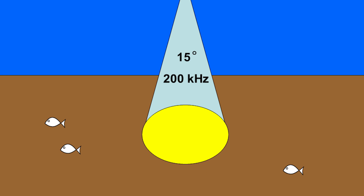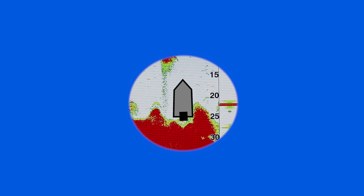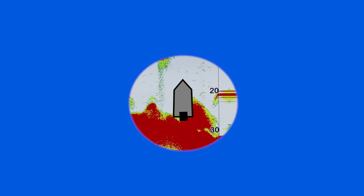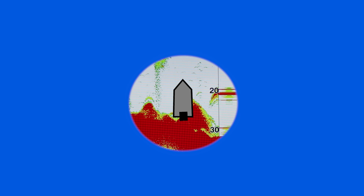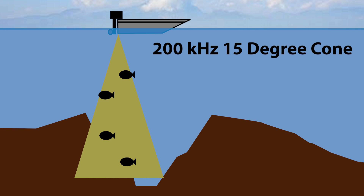The 200k hertz frequency selection uses a 15 degree transducer cone angle, and even though it covers less area it'll give your images greater detail of the bottom terrain. The 200k hertz frequency also allows you to peer down deeper into those ledges and drop-offs with greater detail and see the fish you may have otherwise been missing.